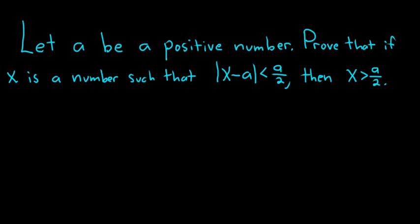Let a be a positive number. Prove that if x is a number such that the absolute value of x minus a is less than a over 2, then x is bigger than a over 2.